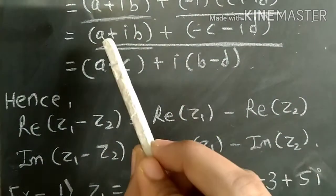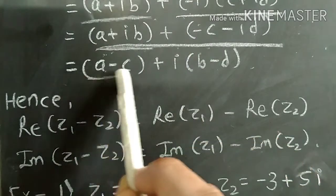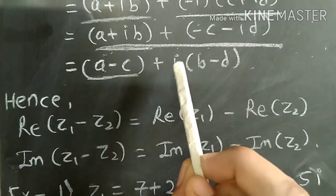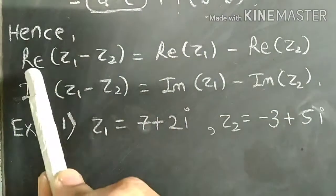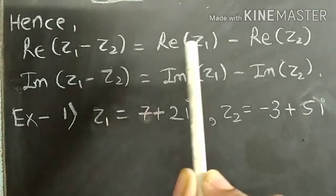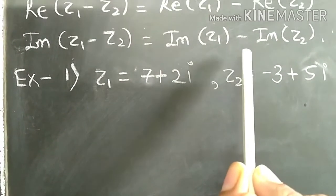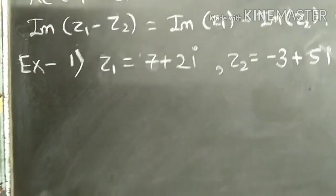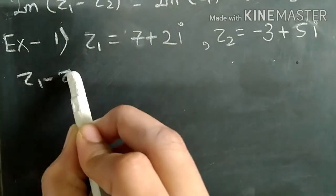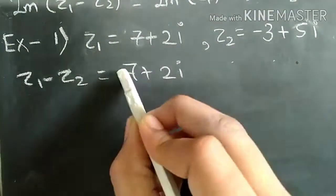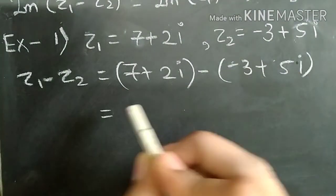Applying scalar multiplication, minus 1 times C is minus C, and minus 1 times ID is minus ID. So we get A plus IB plus minus C minus ID. Adding the real parts: A plus minus C, and imaginary parts: IB minus ID gives I times B minus D. We can conclude that real part of Z1 minus Z2 equals real part of Z1 minus real part of Z2, and imaginary part of Z1 minus Z2 equals imaginary part of Z1 minus imaginary part of Z2. Let's do an example: Z1 is 7 plus 2i and Z2 is minus 3 plus 5i.